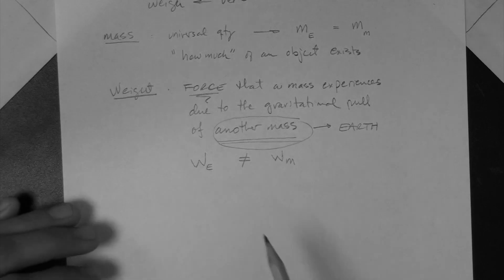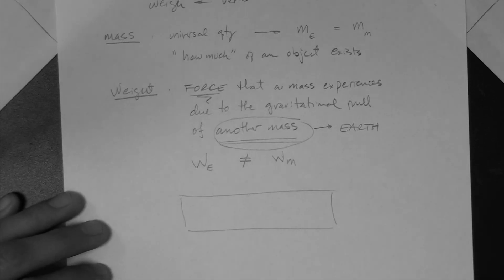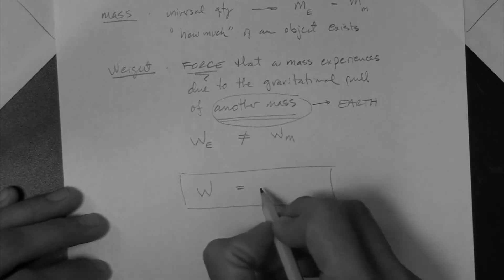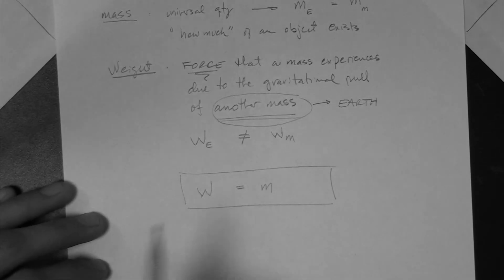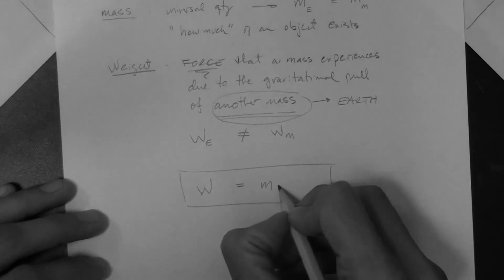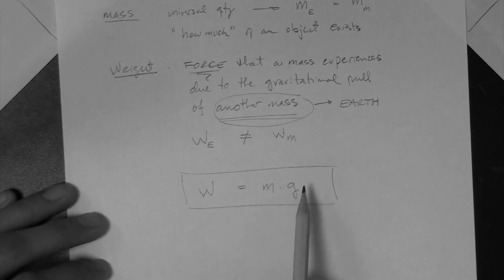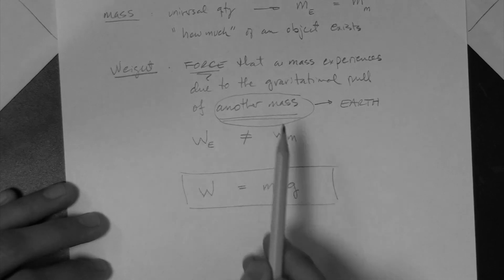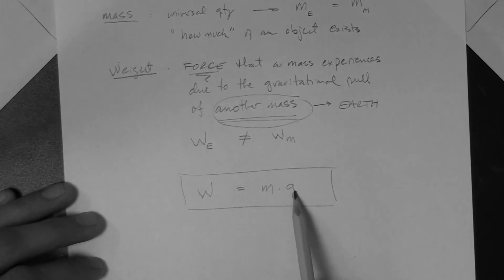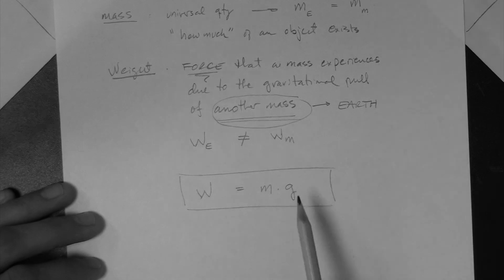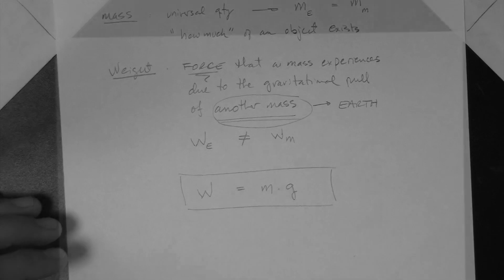The fundamental equation is: weight equals mass times the gravitational acceleration of the other mass. For us, generally, that's the Earth, which means g equals 9.81 meters per second squared. If it were the Moon, it would be lower than 9.81 meters per second squared.